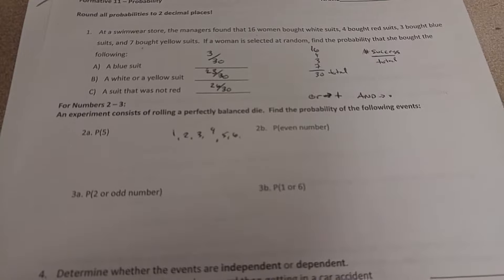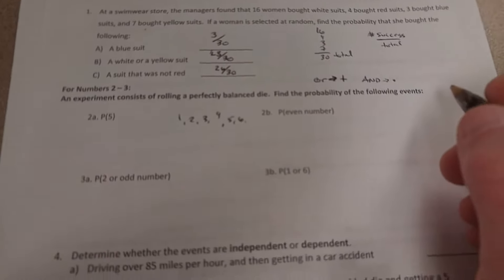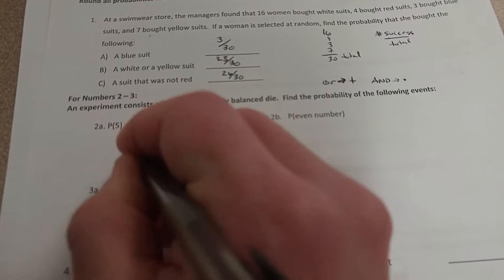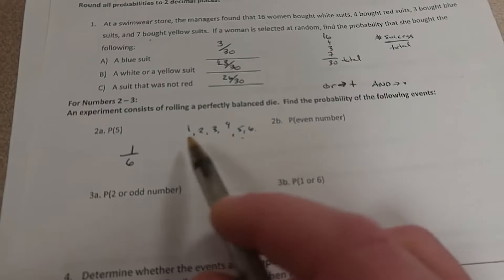We want the probability that we initially roll the number 5. Well, there's only one 5 out of 6 options.